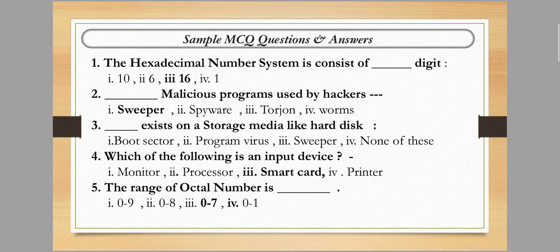Next question: the range of octal numbers is — zero to nine, zero to eight, zero to seven, or zero to one? We know that the octal number system uses digits zero through seven. So zero to seven is the correct answer.